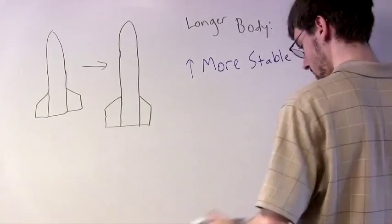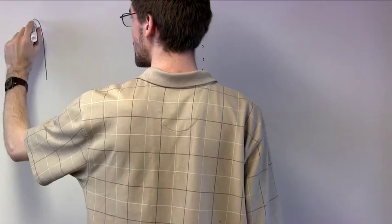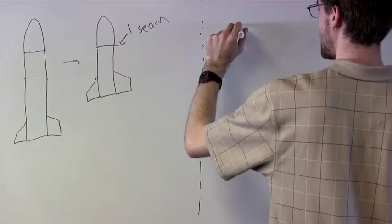That said, if we make our rocket's body longer than it absolutely has to be, we can cut it down very easily to reduce mass and surface area. Extending a body tube that is too short is much more challenging and leaves more seams, which substantially increases drag.